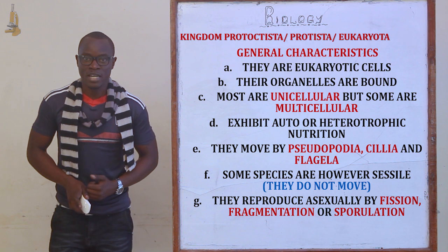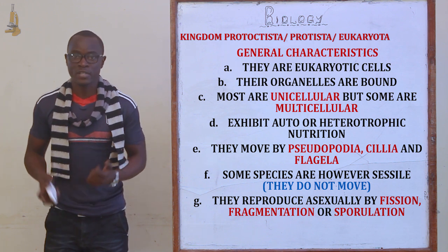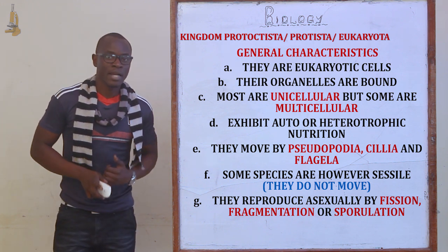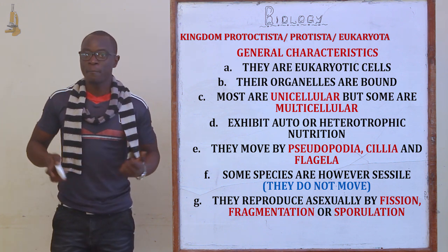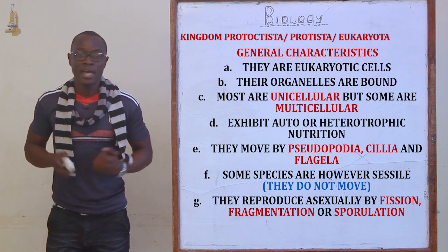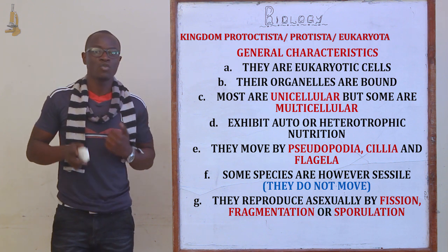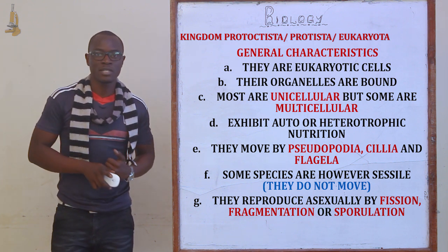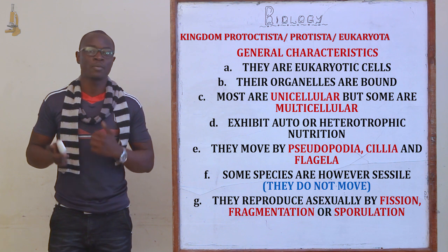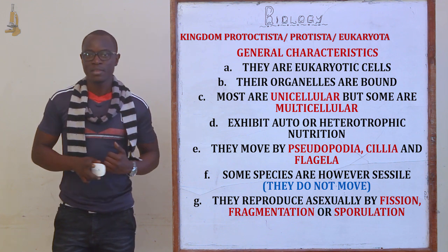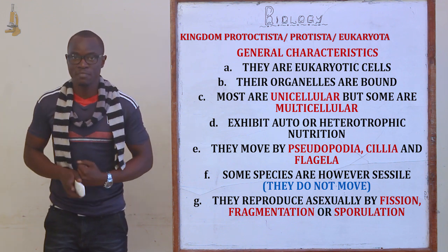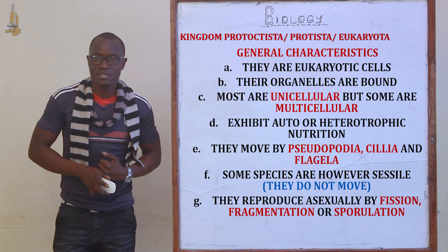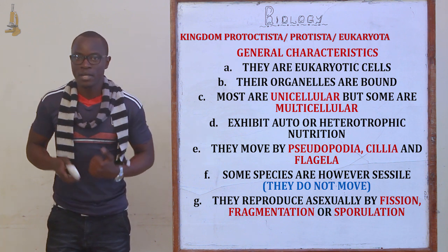The first characteristic is that they are eukaryotic cells. All their organelles are membrane-bound, hence the name eukaryota. Kingdom Protoctista is also referred to as eukaryota, meaning that their organelles are membrane-bound.